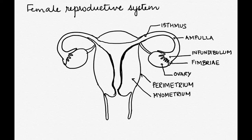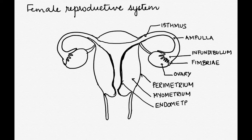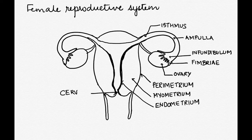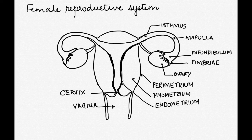So the uterine wall is made up of three parts: the perimetrium, myometrium, and the endometrium. The small opening at the base of the uterus is called the cervix, and next to that is the vagina, which opens outside — that is the opening of the female reproductive system. It is also called the birth canal.